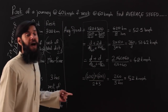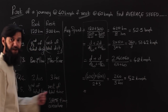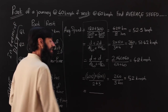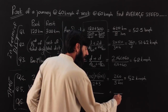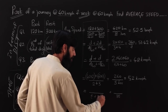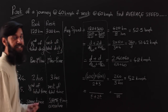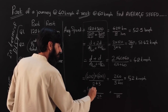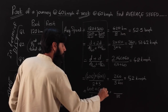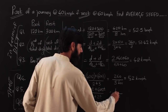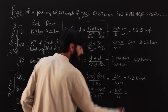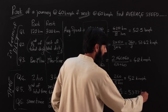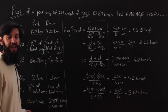Question 5: the first part is one-third of the total time, the second part is two-thirds. Assume total time = 3t, so the first stretch is t and the second is 2t. Distance in the first stretch = 40 × t = 40t; second = 60 × 2t = 120t. Total distance = 160t. Total time = 3t. The t cancels: average speed = 160t / 3t = 53.33 kilometers per hour.